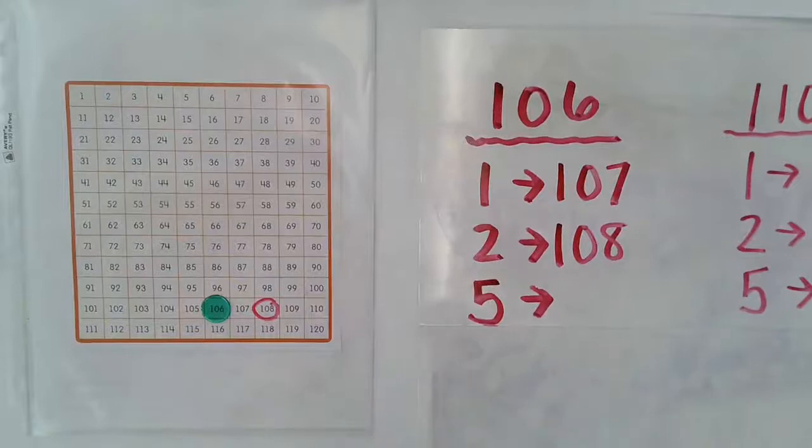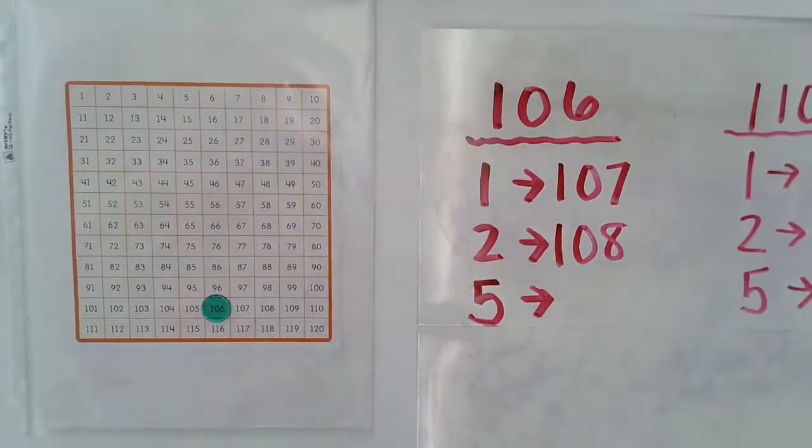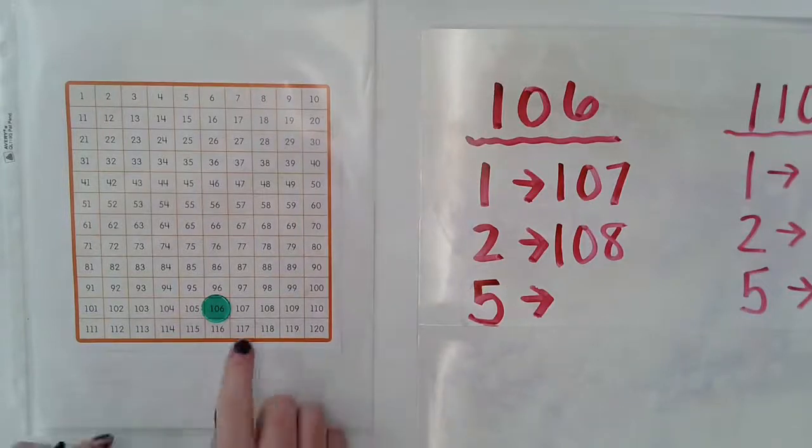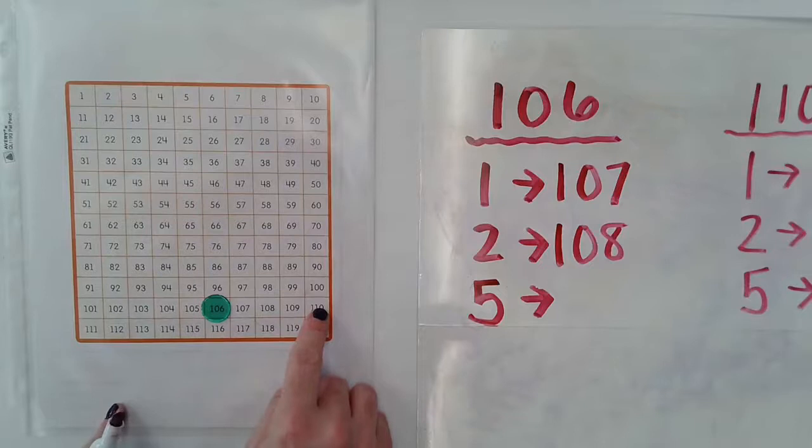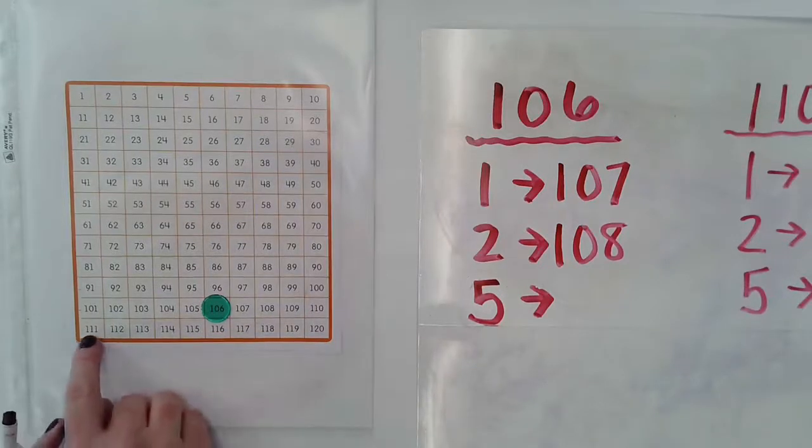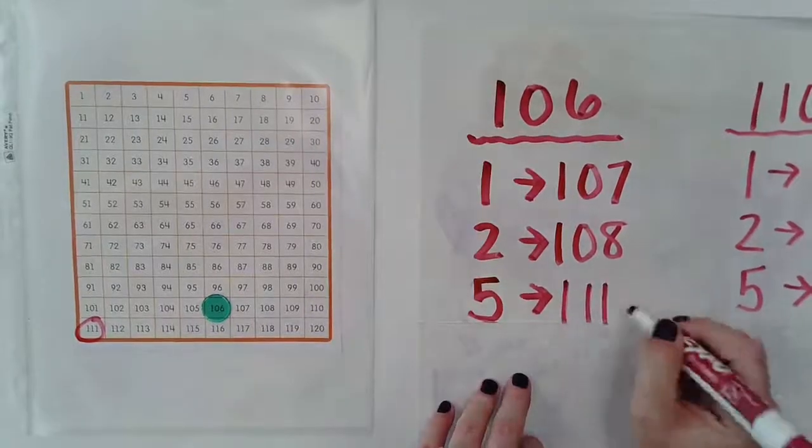If I want to count up by my fives, I start at my 106 again, and I'm going to count up five squares. One, two, three, four. And I know I need to go to the next column to get my fifth number, which would be 111.